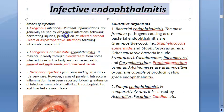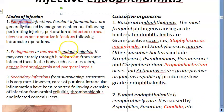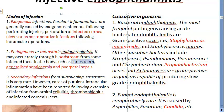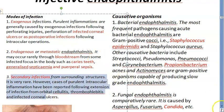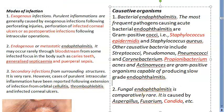Looking at infective endophthalmitis, the modes of infection can be exogenous — from outside, such as a corneal ulcer or post-operative infection — or endogenous, where bacteria spread via the bloodstream from sources like dental caries, septicemia, or puerperal sepsis after childbirth. There is also secondary infection from surrounding structures such as orbital cellulitis, thrombophlebitis, or an infected corneal ulcer.